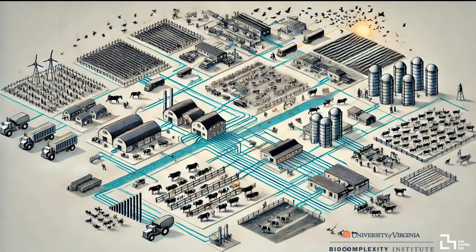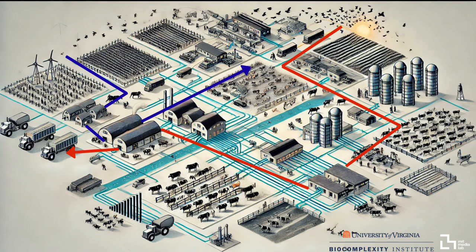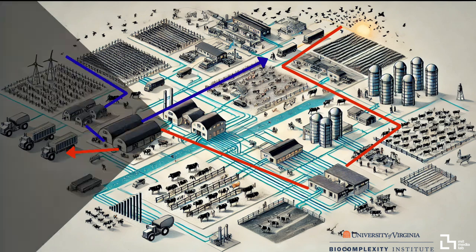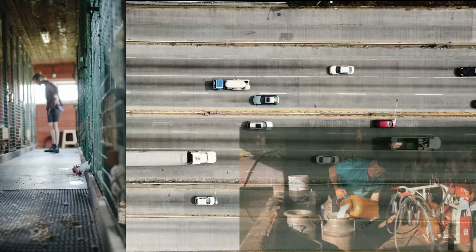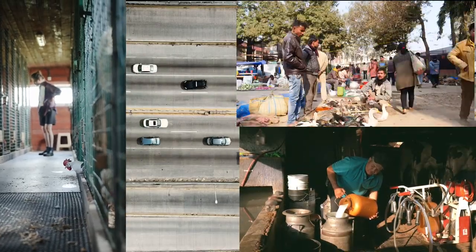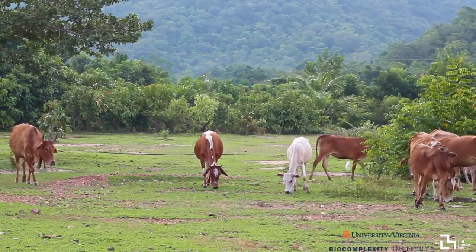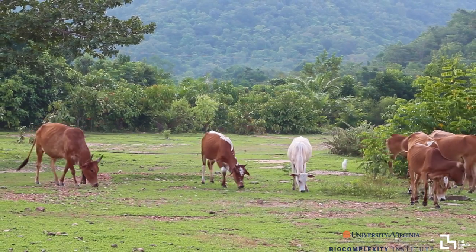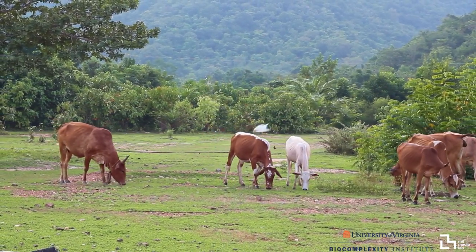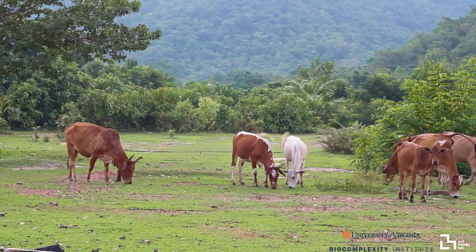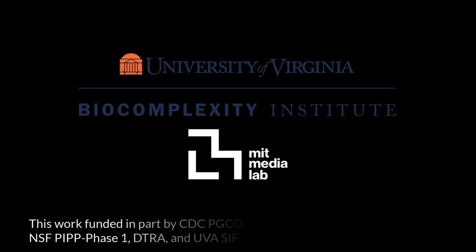As we continue refining our models, we strive to address the missing pathways, such as animal transport, market movements, and agricultural worker activity. By enhancing our data, we move closer to a comprehensive solution for managing disease spread. Through collaboration and advanced modeling, we can better understand the complex dynamics of infectious disease and protect our farms, our communities, and our future.